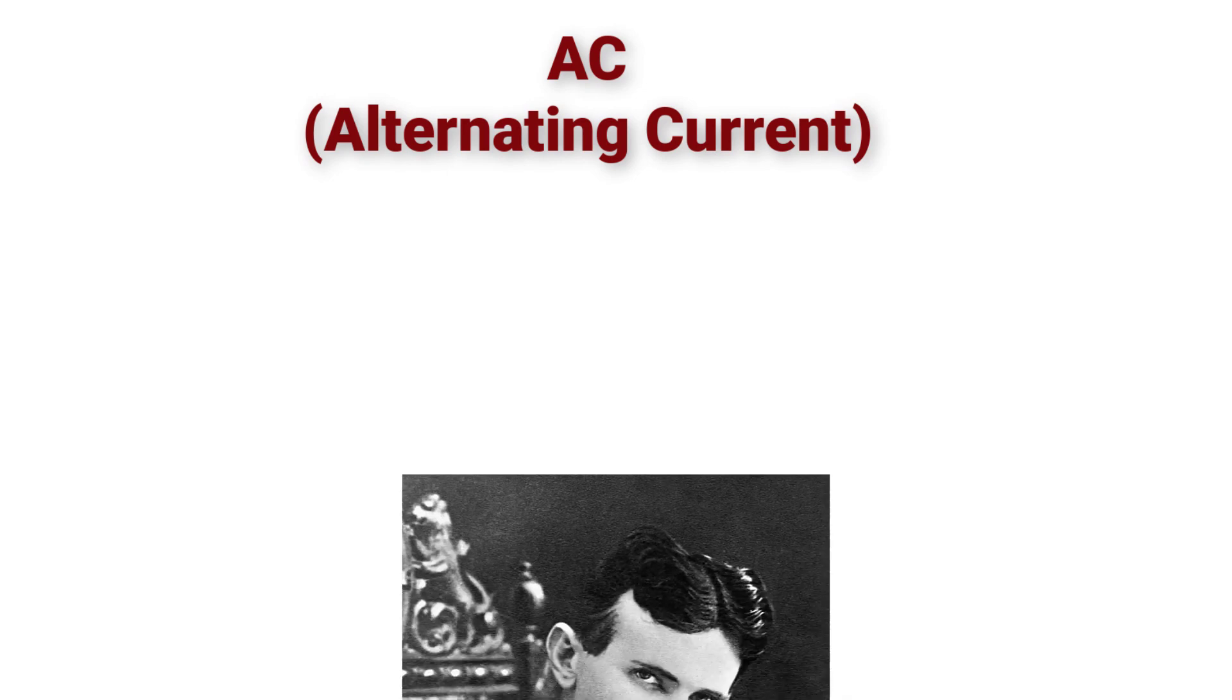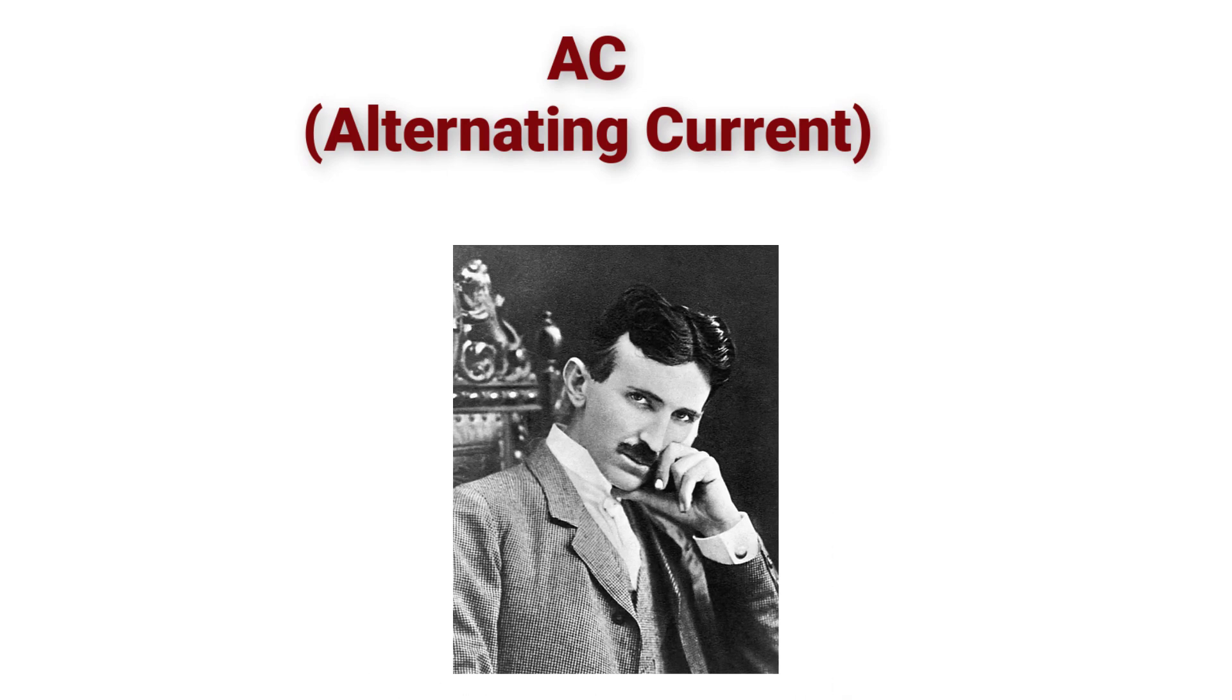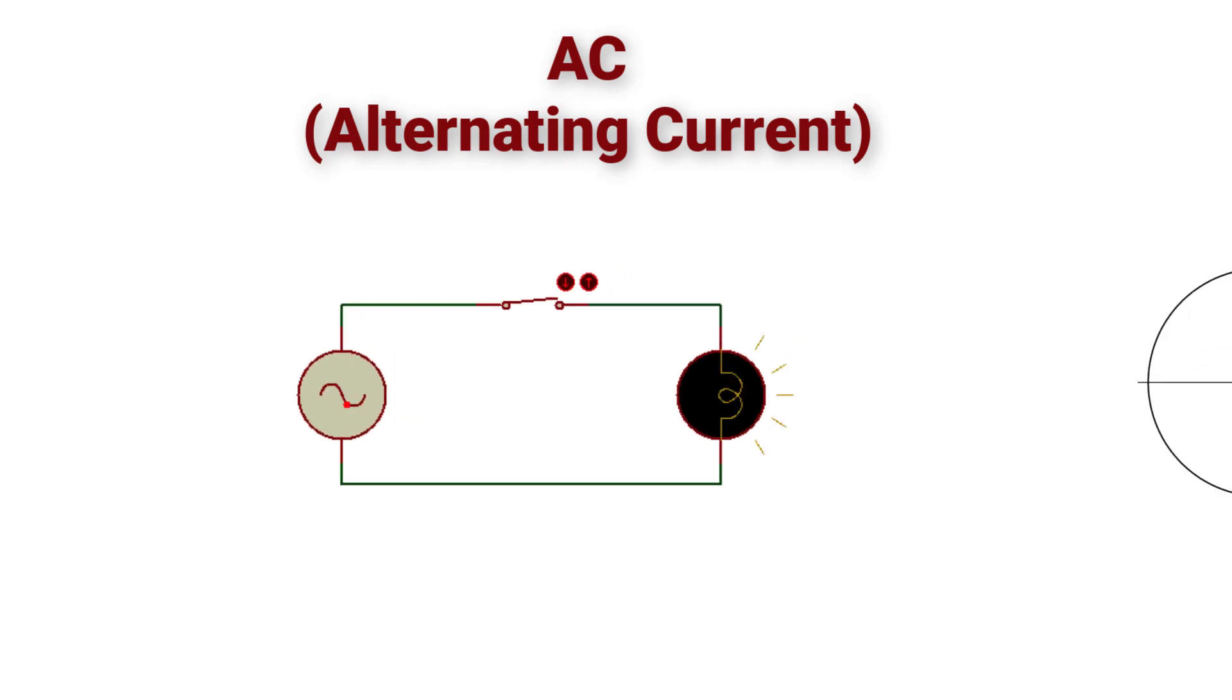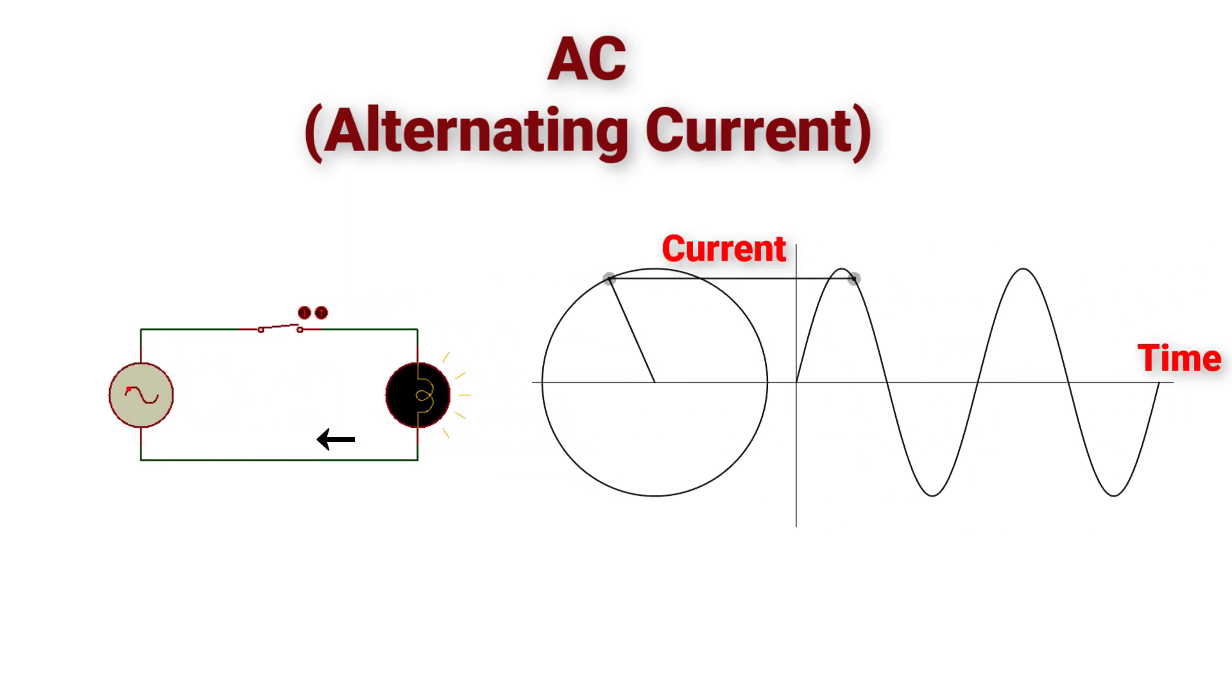The second form of current is AC or alternating current, which was discovered by Nikola Tesla. As you can see, if you connect a lamp to an AC source, then turn on the switch, the current will be bidirectional, which alternates back and forth in a sinusoidal form.